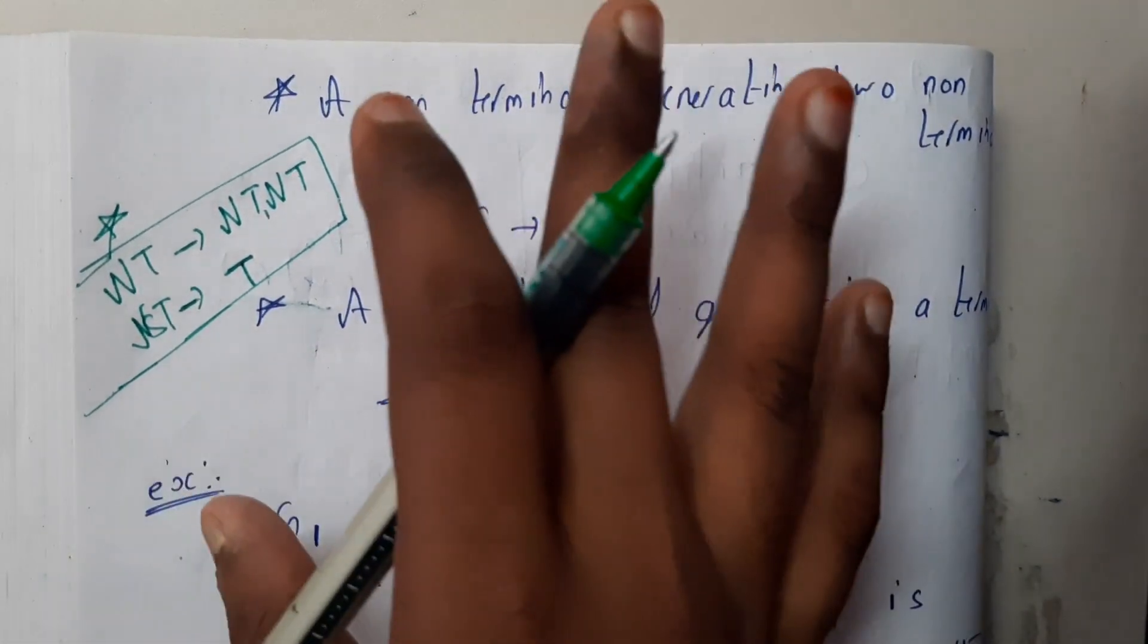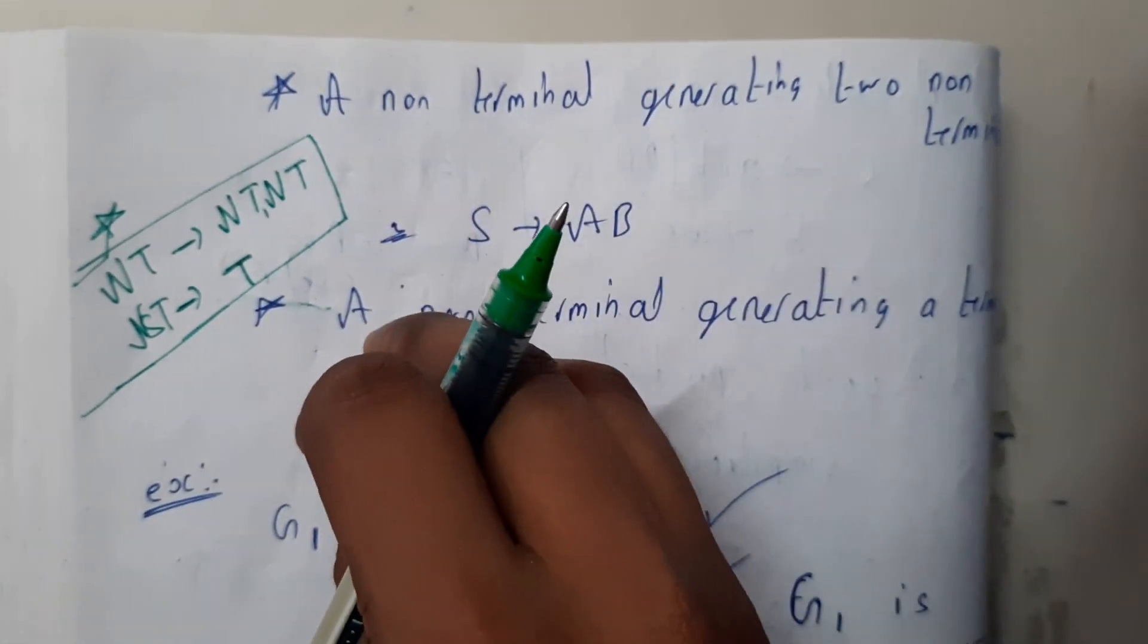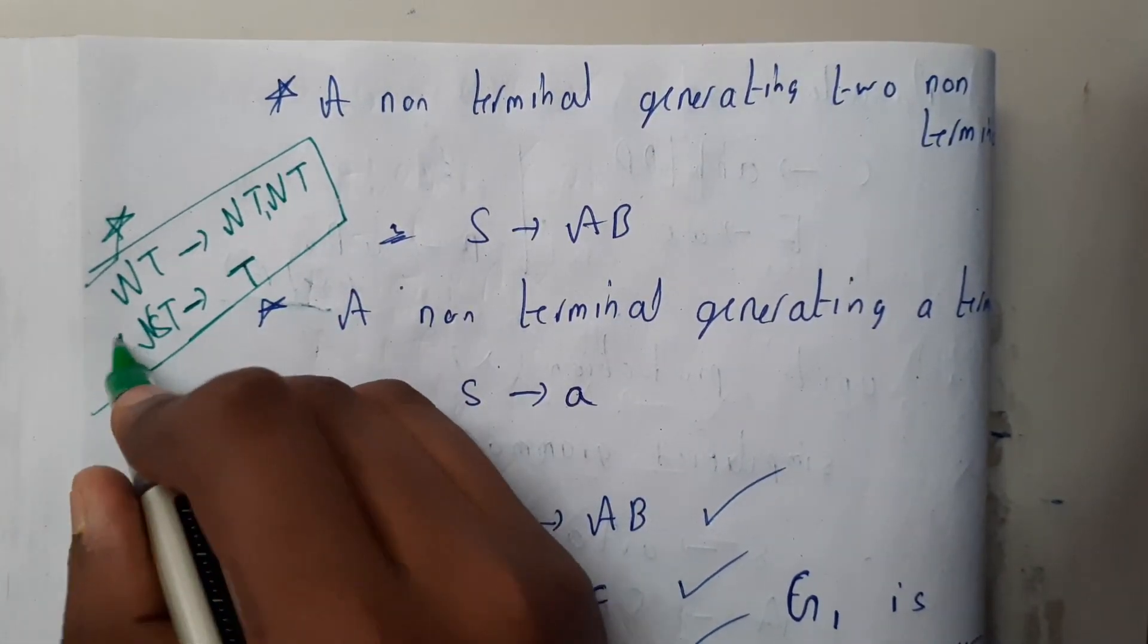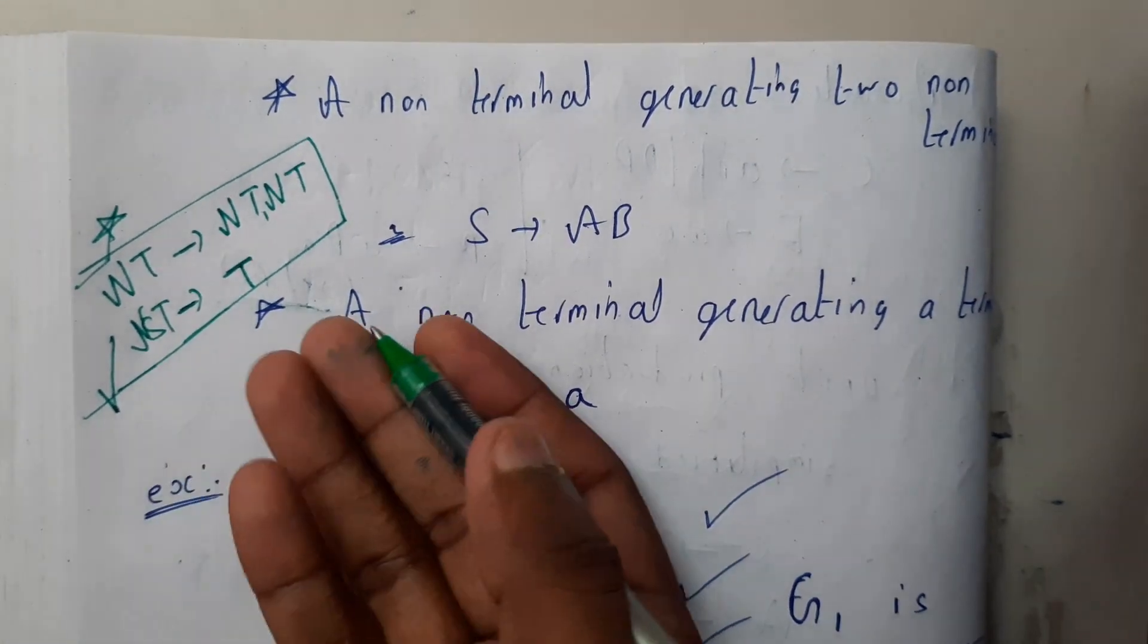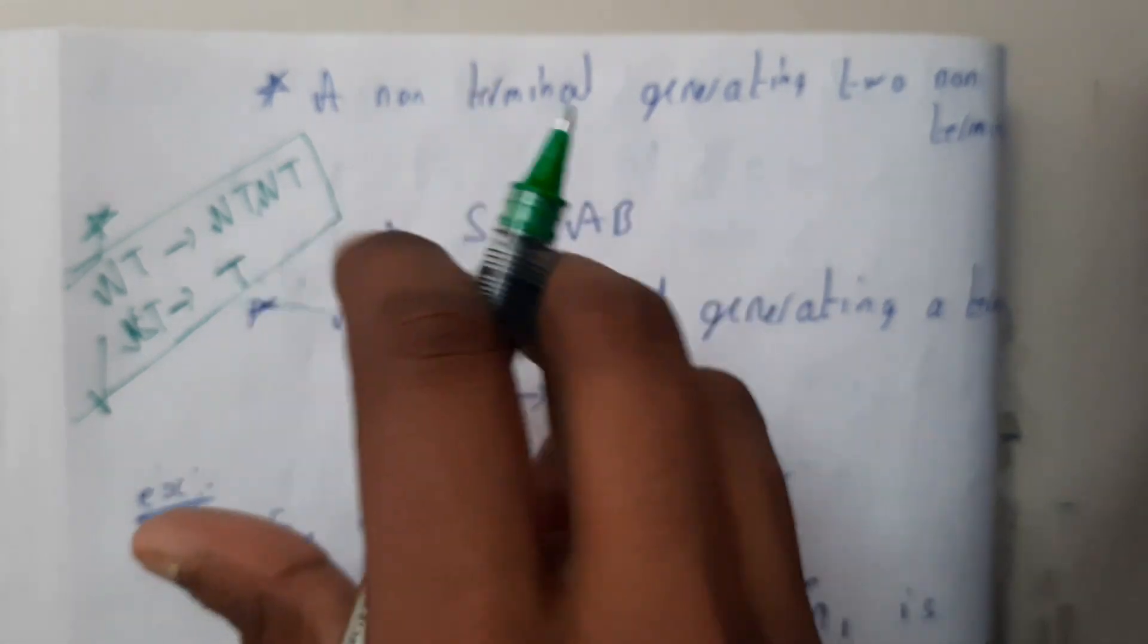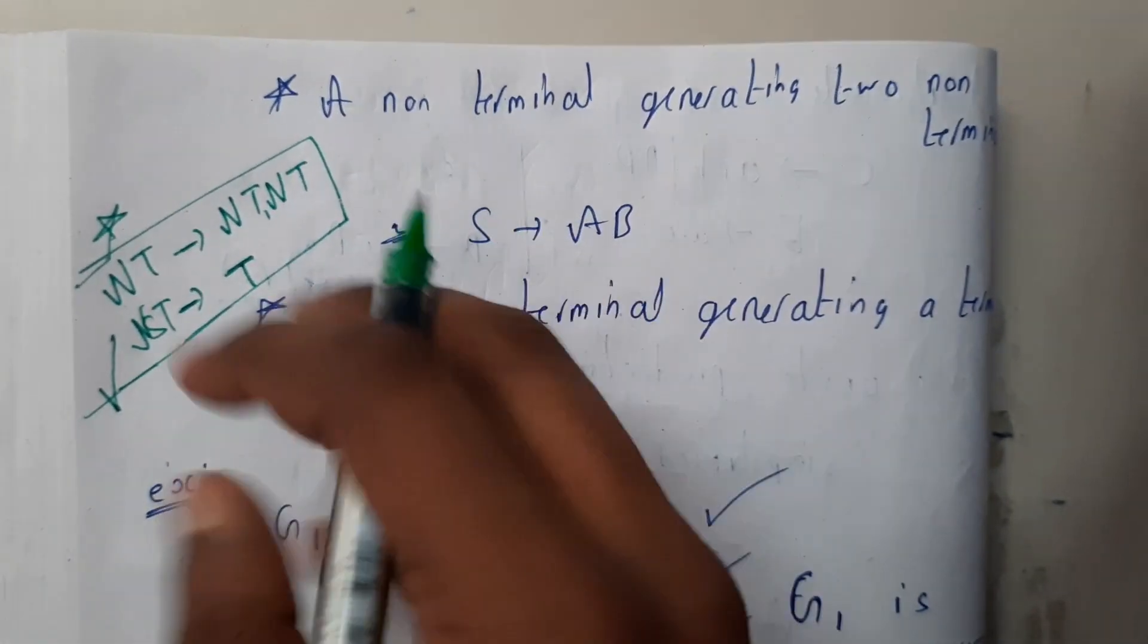A grammar or a context-free language is said to be in Chomsky normal form if it follows these two conditions. If it does not follow these two conditions, we should modify some changes in the language to make it satisfy this.